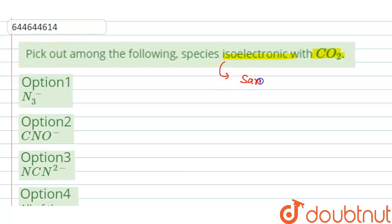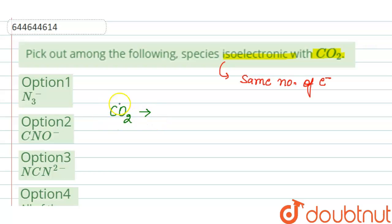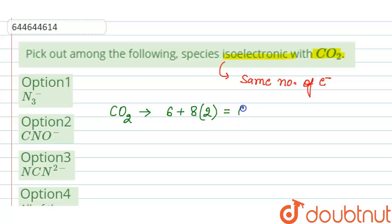So first we will calculate the number of electrons in the CO₂ molecule. In CO₂, the number of electrons in carbon is 6, as its atomic number is 6, plus the number of electrons in oxygen, which is 8, and there are two oxygen atoms, so multiplied by 2.